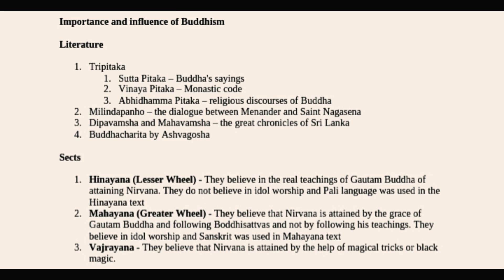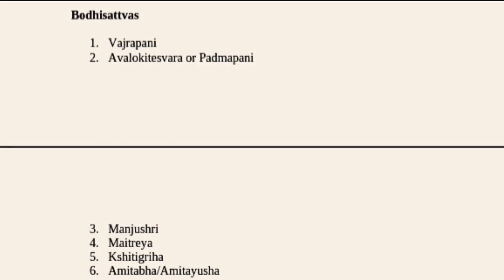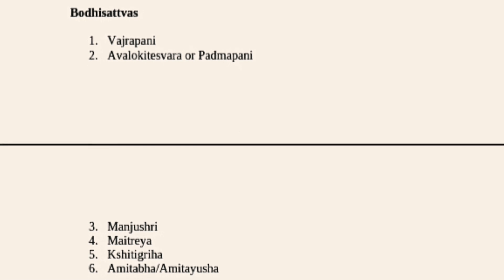Vajrayana believes that nirvana is attained by the help of magical tricks or black magic. This practice, not mentioned anywhere in original Buddhist philosophy, was added later and contributed to the decline of Buddhism.